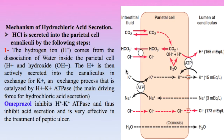Mechanism of hydrochloric acid secretion: hydrochloric acid is formed in the lumen of the canaliculus of the parietal cell. To form HCl we need hydrogen ions and chloride ions. Hydrogen ions come from the dissociation of water into hydrogen and hydroxide ions. The hydrogen ion is then secreted into the lumen of the canaliculus in exchange with potassium, a process catalyzed by hydrogen-potassium ATPase, which is considered the main driving force for hydrochloric acid secretion.